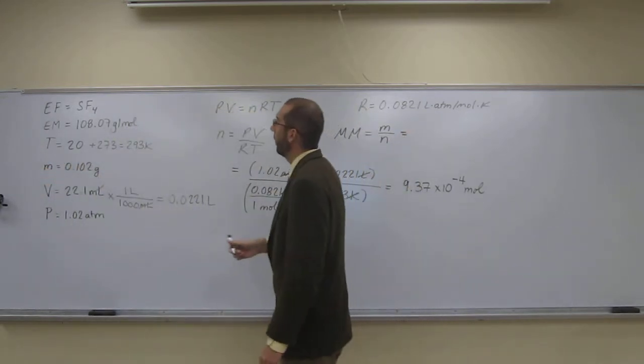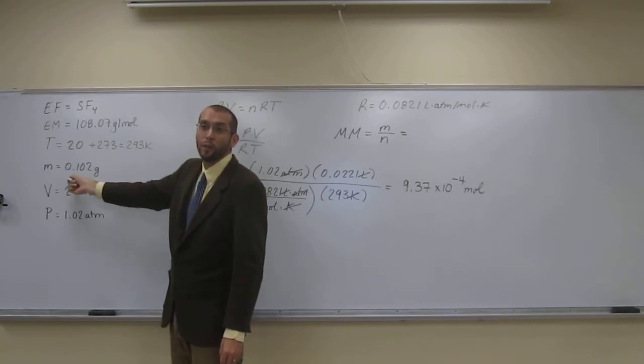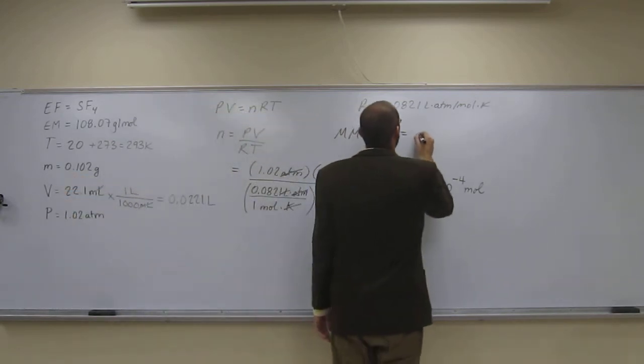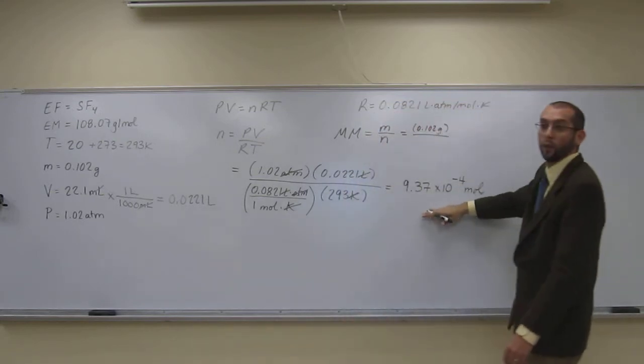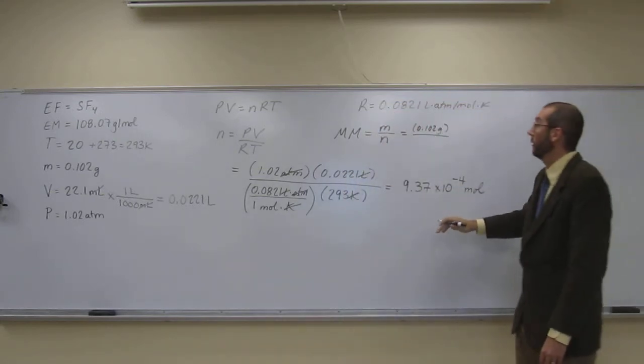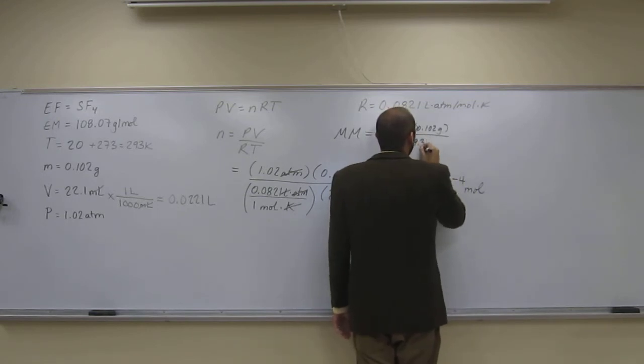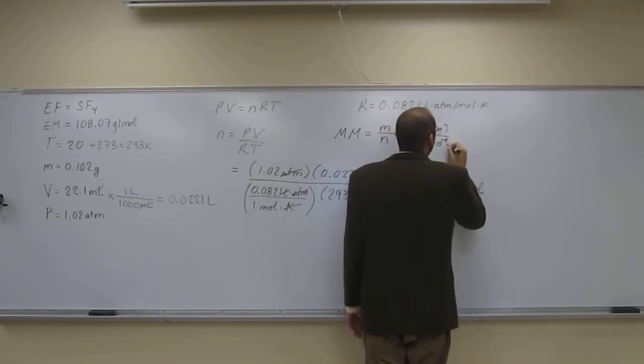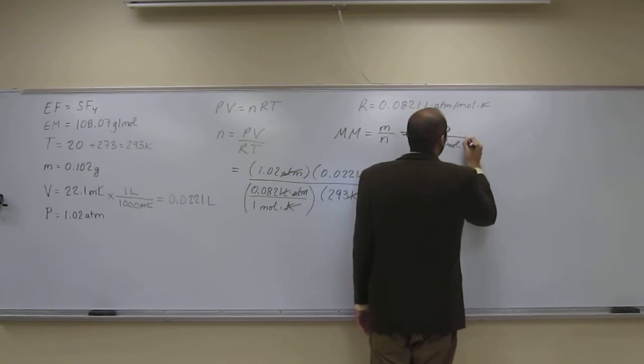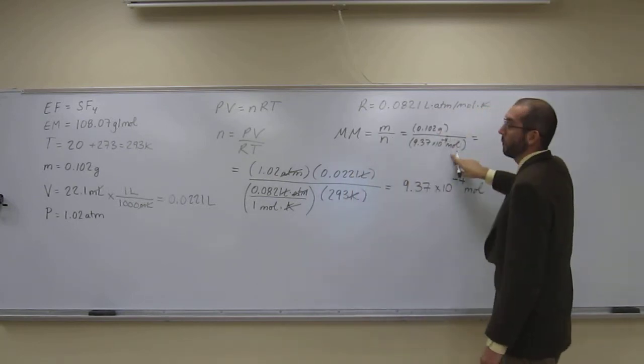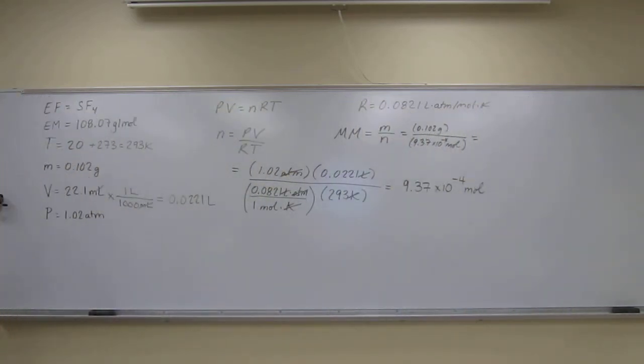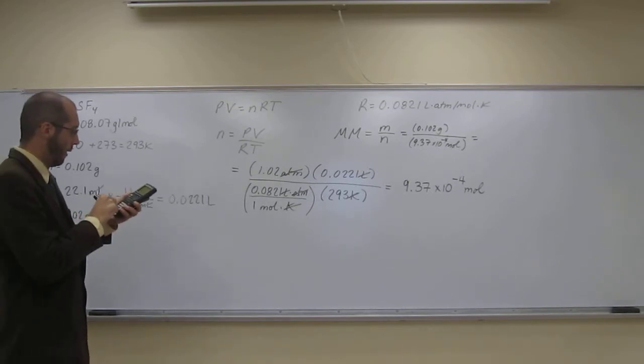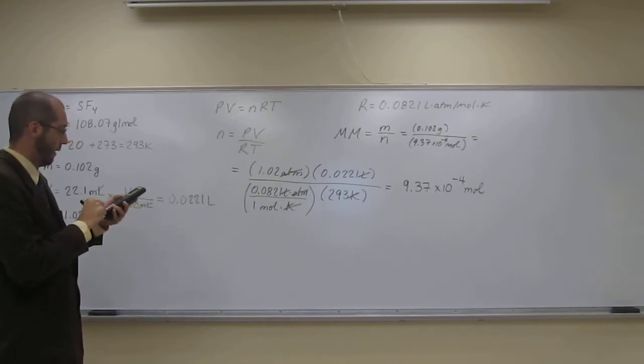So when we look here, do we have the mass in grams? Yes, we do, right? So let's put that in there. 0.102 grams. And do we have the number of moles? Yes, we just solved it. So let's put that in there. 9.37 times 10 to the negative 4 moles. And remember, molar mass is grams per mole. And that's what we're looking for, is the molar mass, so eventually we can figure out what the molecular formula is. So 0.102 divided by that number of moles.